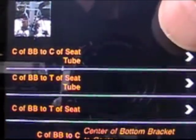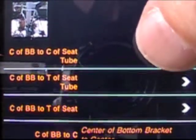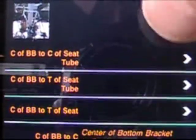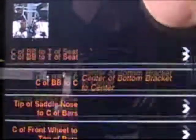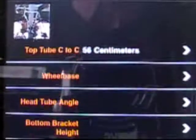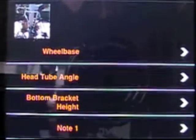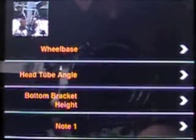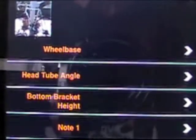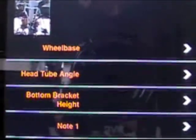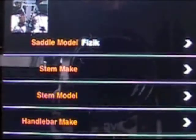Dimensions between the bottom brackets, seat tube, top of the seat tube, top of the seat, wheel base, head tube angle, bottom bracket height — pretty much everything that you could think of or need.